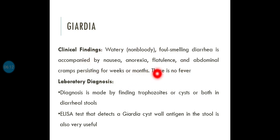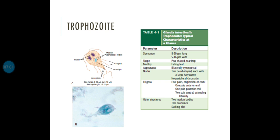Laboratory diagnosis is made by finding trophozoite or cyst, or both, in diarrheal stool. ELISA test can also be done to detect Giardia cyst wall antigen in stool, which is very useful. Modern techniques including molecular diagnosis and antibody/antigen detection are used in developed countries. In underdeveloped countries like Pakistan, India, and Bangladesh, microscopic examination of diarrheal stool for trophozoites and cysts remains the standard.